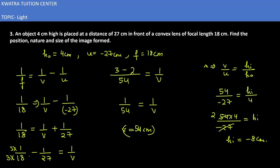That means height of the image is minus 8cm. And what we can say about the image? As hᵢ is minus, so image would be real and inverted, as this is the case of convex lens. This is the answer for the third one.